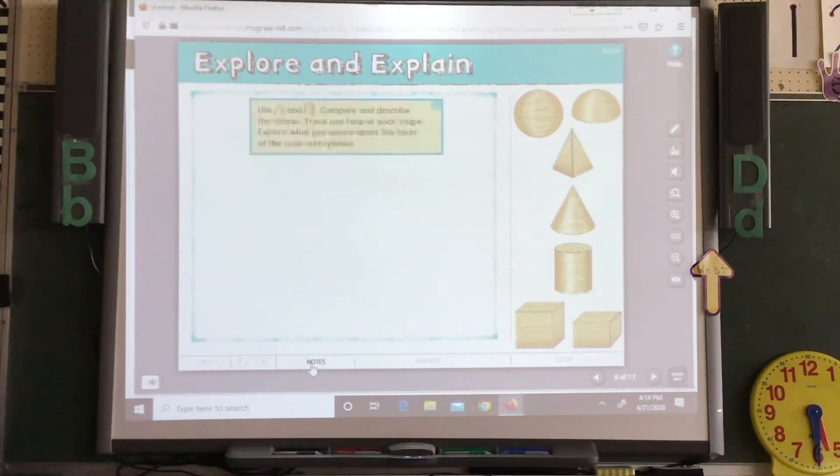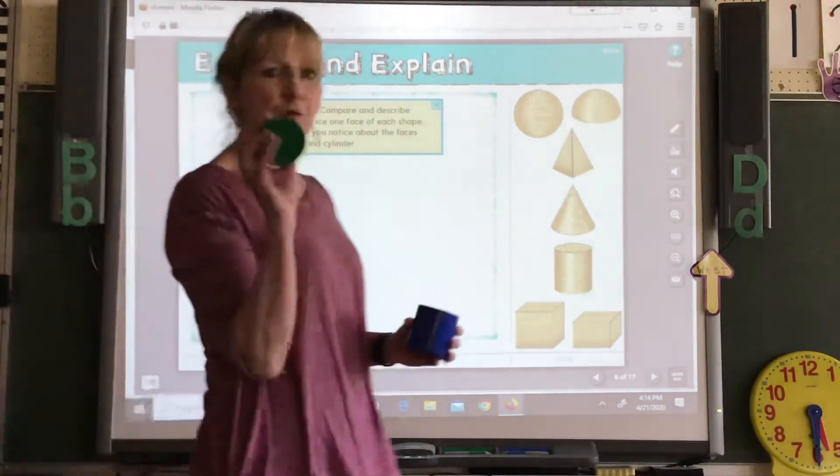Alright, let's see what it wants us to do. It says, use the cone and cylinder. Compare and describe the shapes. Trace one face of each shape. Explain what you've noticed about the faces of the cone and the cylinder. Okay, so let's talk about the cone first.